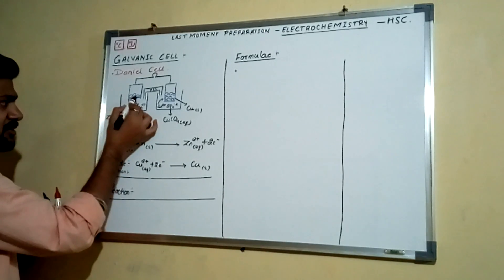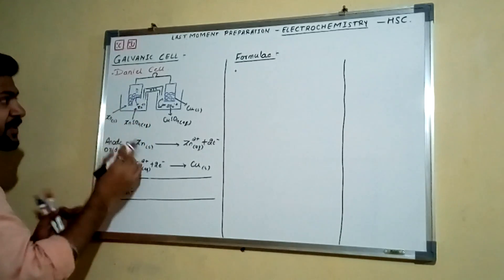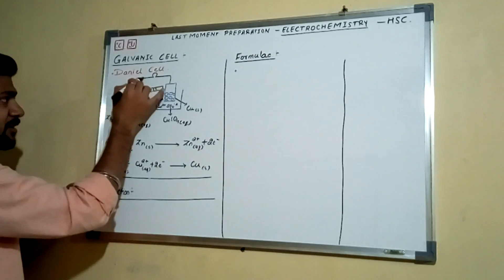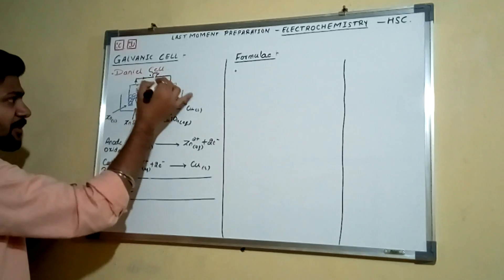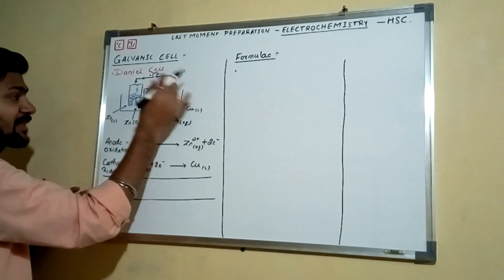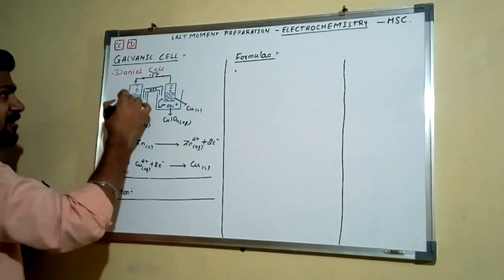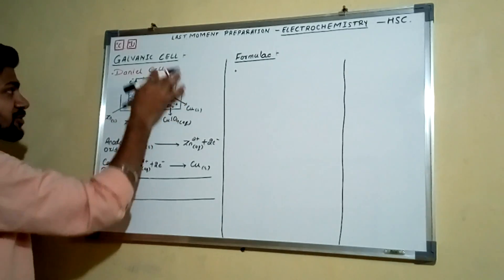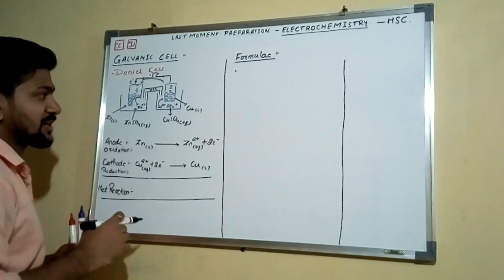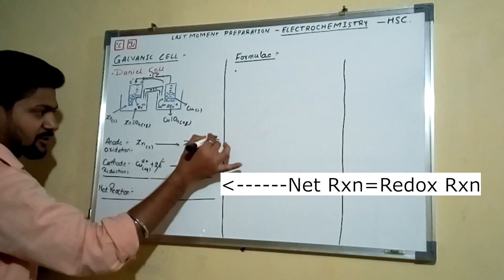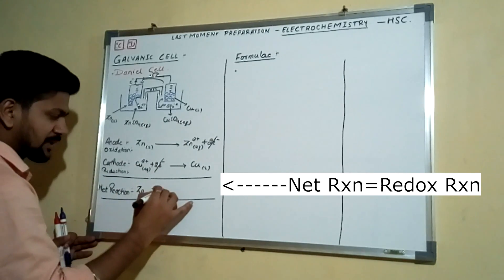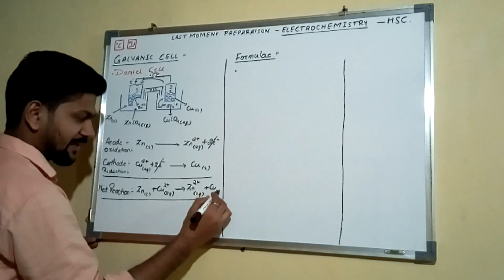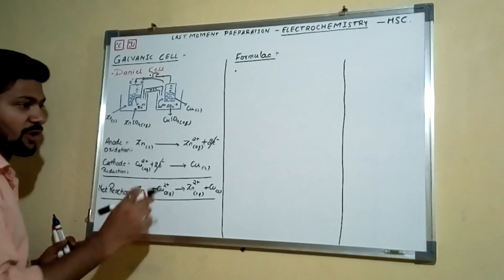Because of these reactions, there is a flow of electrons. Zinc atoms enter the solution leaving behind two electrons on the rod. These electrons travel through the rod, through the bulb — making it glow — and into the copper rod. This creates a potential difference. Current flows in the opposite direction to electron flow, from the positive towards the negative rod. The net reaction is: Zn(s) + Cu²⁺(aq) → Zn²⁺(aq) + Cu(s).